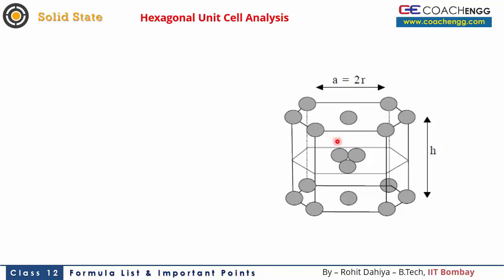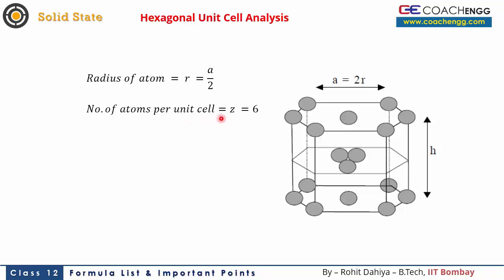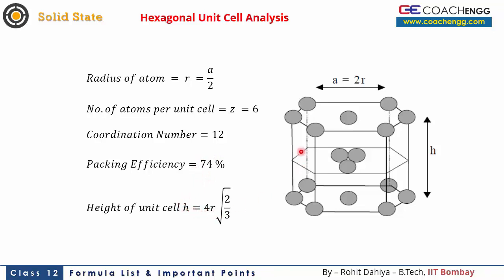For the hexagonal unit cell, instead of a cube we have a hexagon. The condition for radius of atom is r = a/2, where 'a' is the side of the hexagon. The number of atoms per unit cell is 6. The coordination number is 12. The packing efficiency is again 74%, same as FCC. The height of the unit cell is 4R × √(2/3). The hexagonal close packing has an AB AB type layer arrangement — the third layer repeats the first, the fourth repeats the second, and so on.